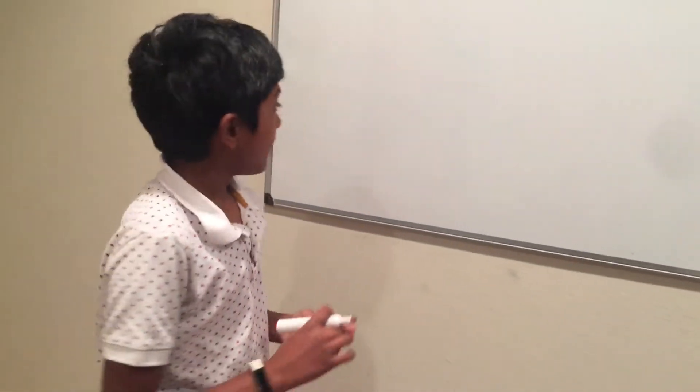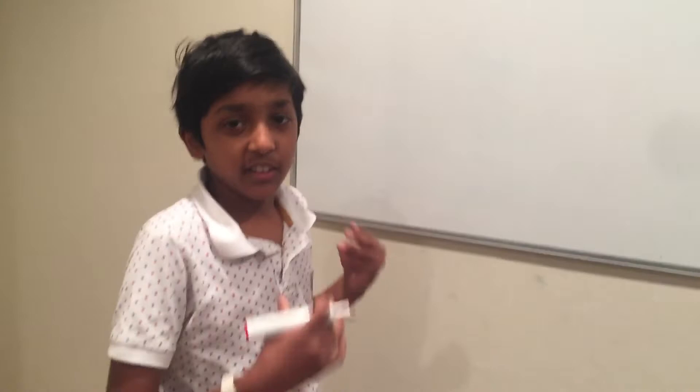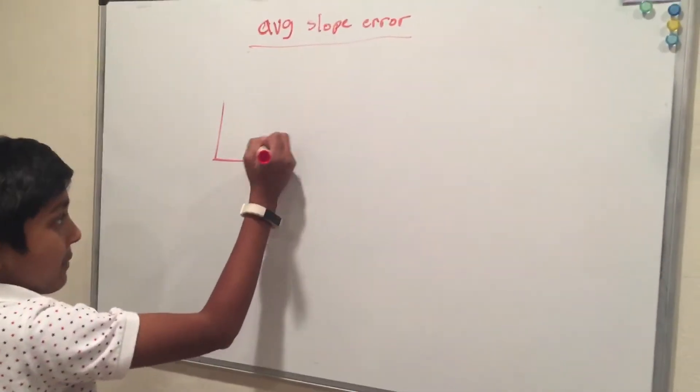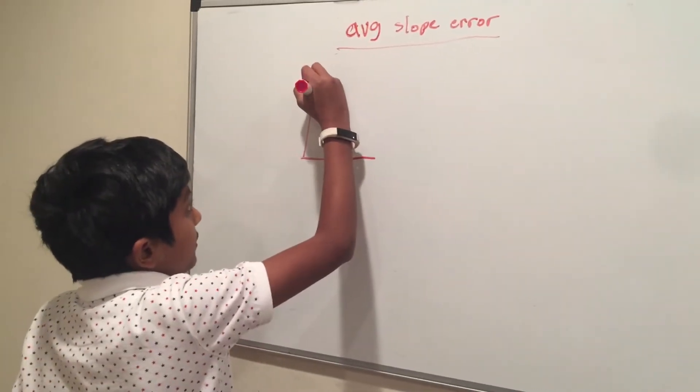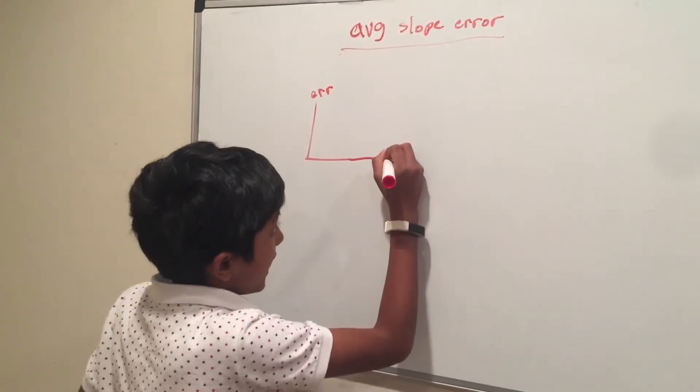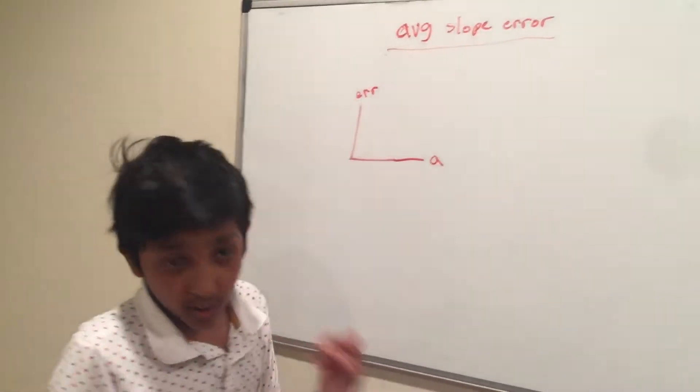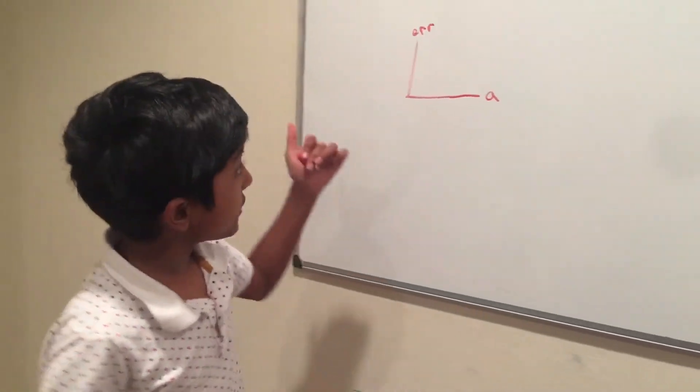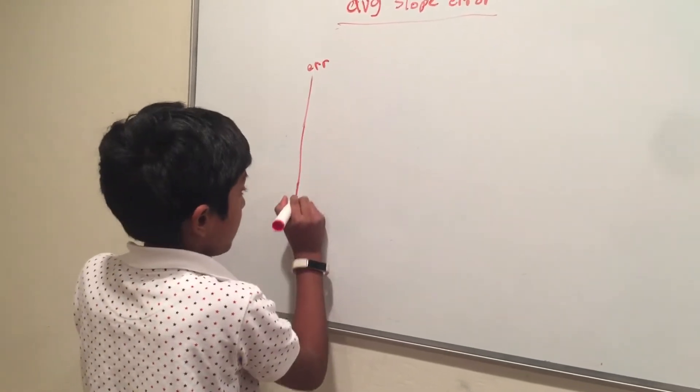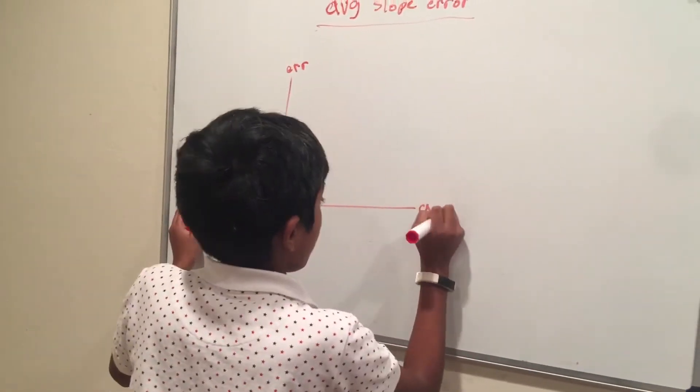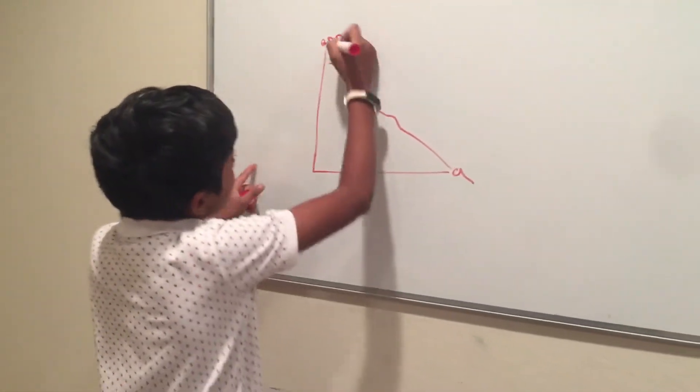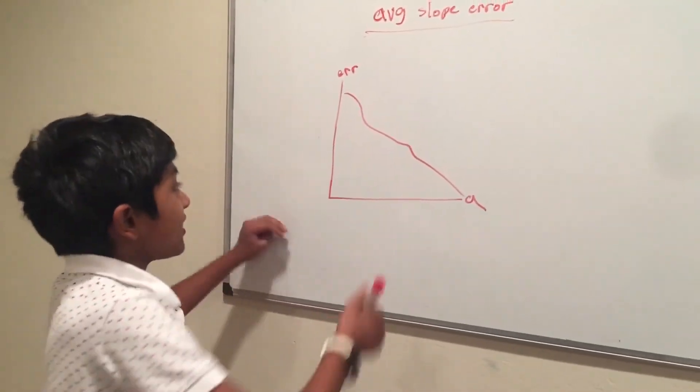So you have a graph with error at the y-axis and one of the constants at the x-axis. You have a big mountain and gradient descent has picked its spot. So it started here, this is random a.